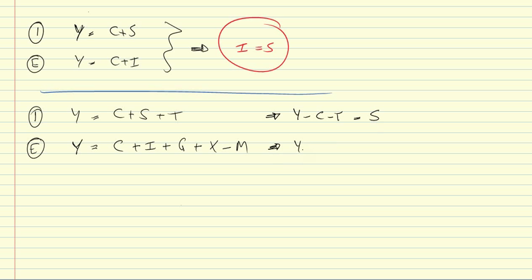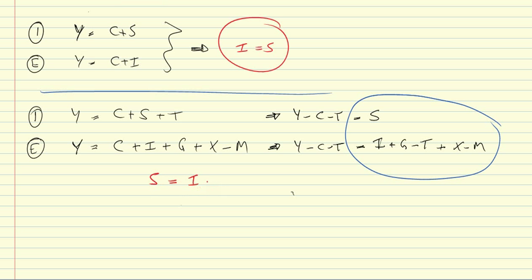If we subtract C and T as well here on the left and right-hand side, what do you get on the right-hand side? We get I plus G minus T plus X minus M. It's straightforward to see that these two right-hand sides have to be equal, so we can write S equal to I plus G minus T plus X minus M.